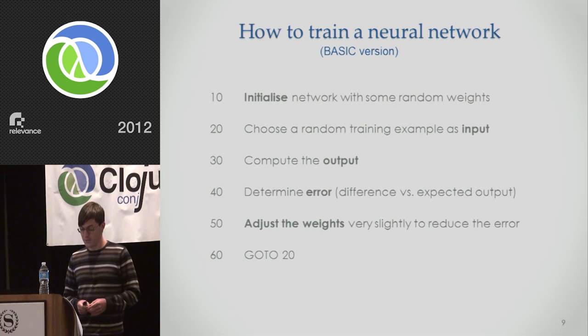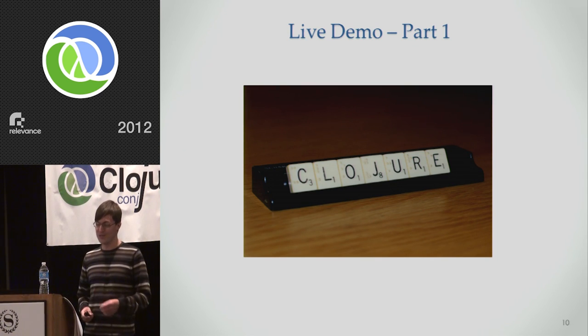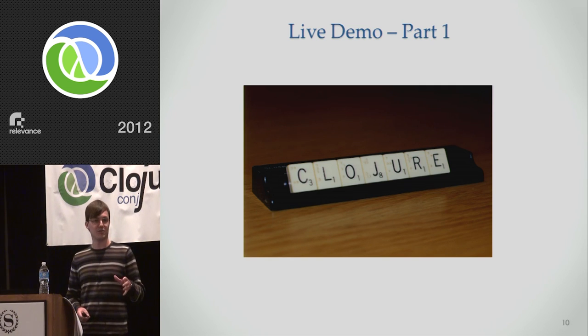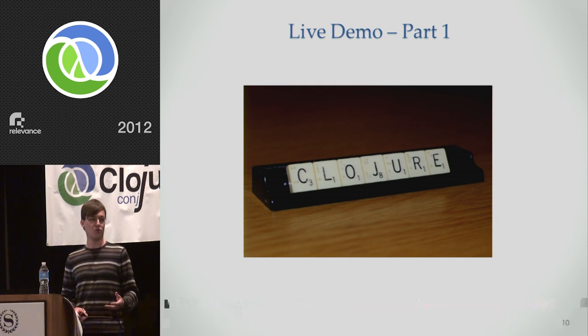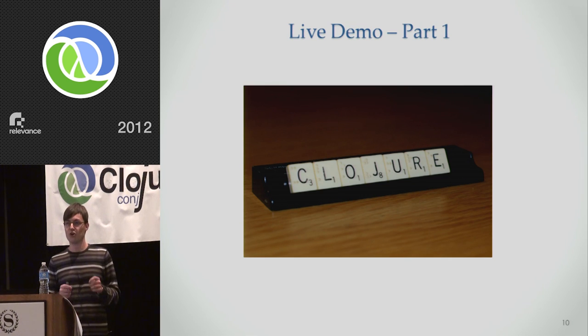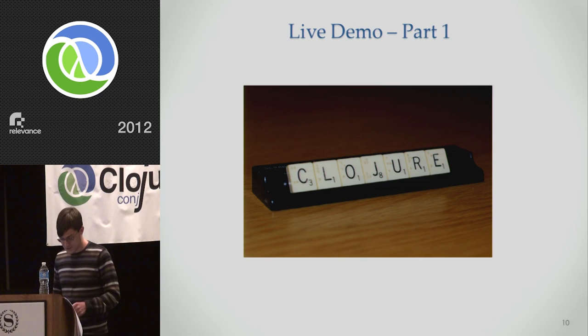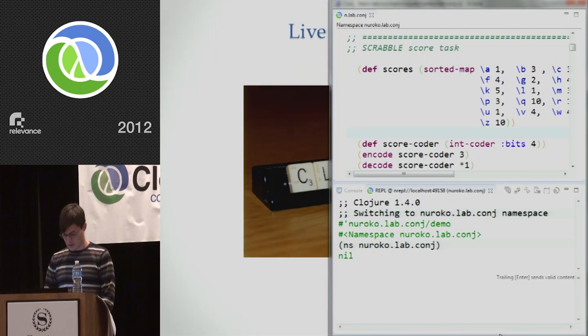And then you're going to go back and do the same again with a different training example. And if you do this lots and lots of times, each time reducing the error very slightly, what you end up with is a network at the end which has a low overall error. So it's producing the expected output of the function as closely as possible over some period of training. So that's the basic algorithm for training neural networks. So let's show this in action. I'll start with a very simple example of how you can do this.